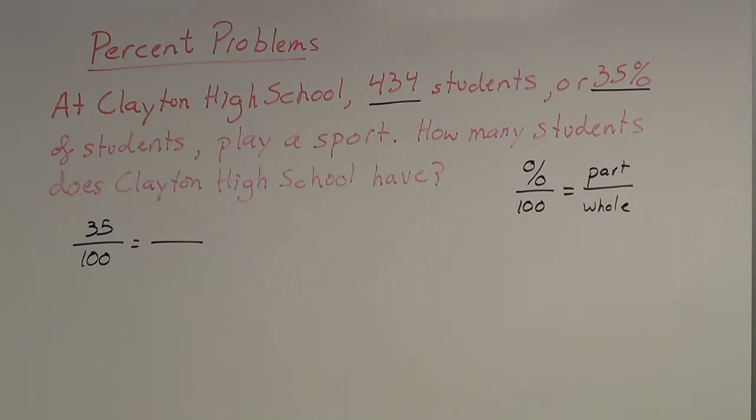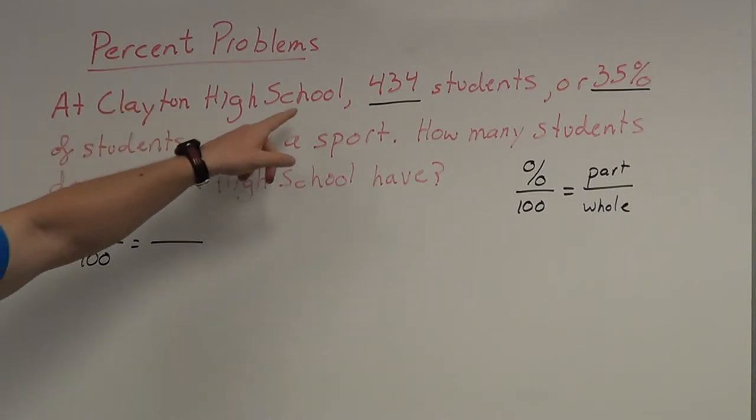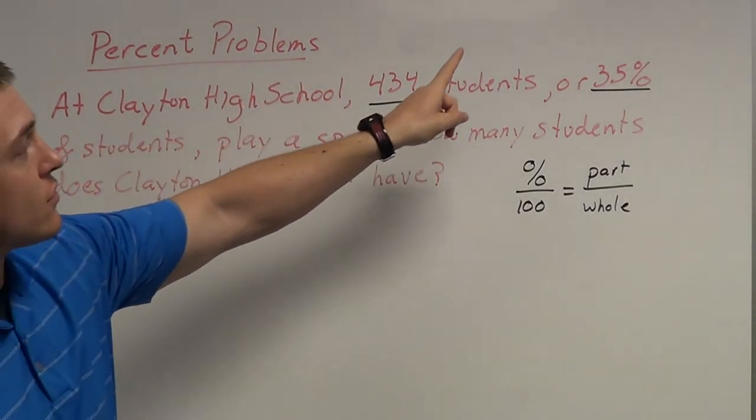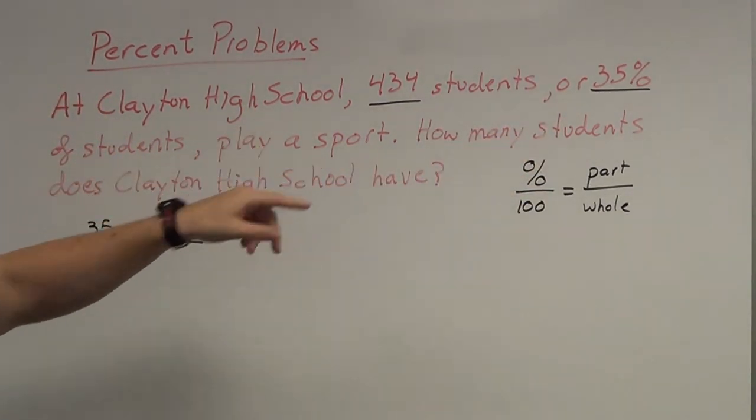In this case, when we're talking about a school, we're talking about part of the students or we're talking about the whole student body. So, as I reread this, this number that comes up, is this just part of the student body or is this the whole student body? At Clayton High School, 434 students or 35% of students play a sport.